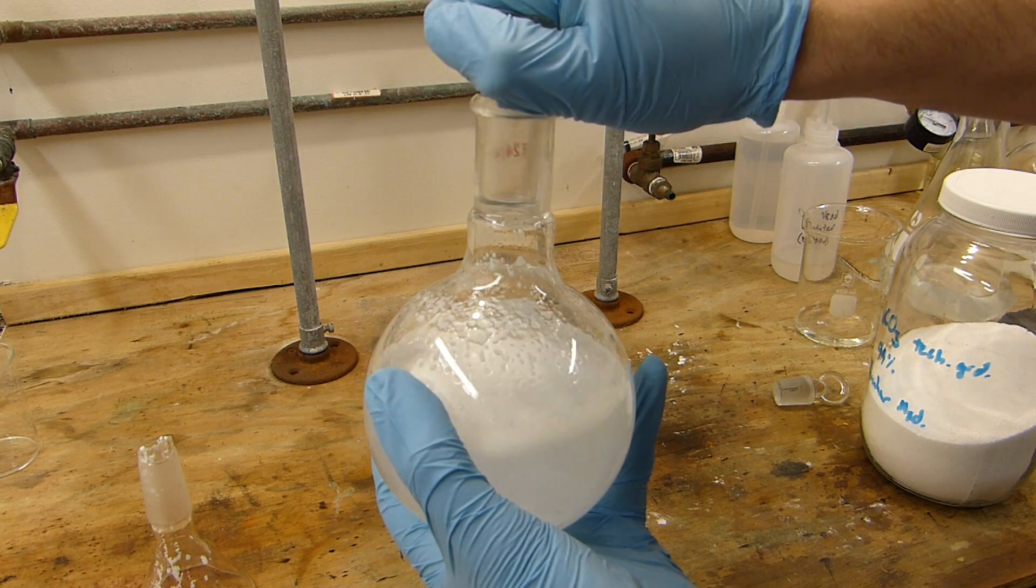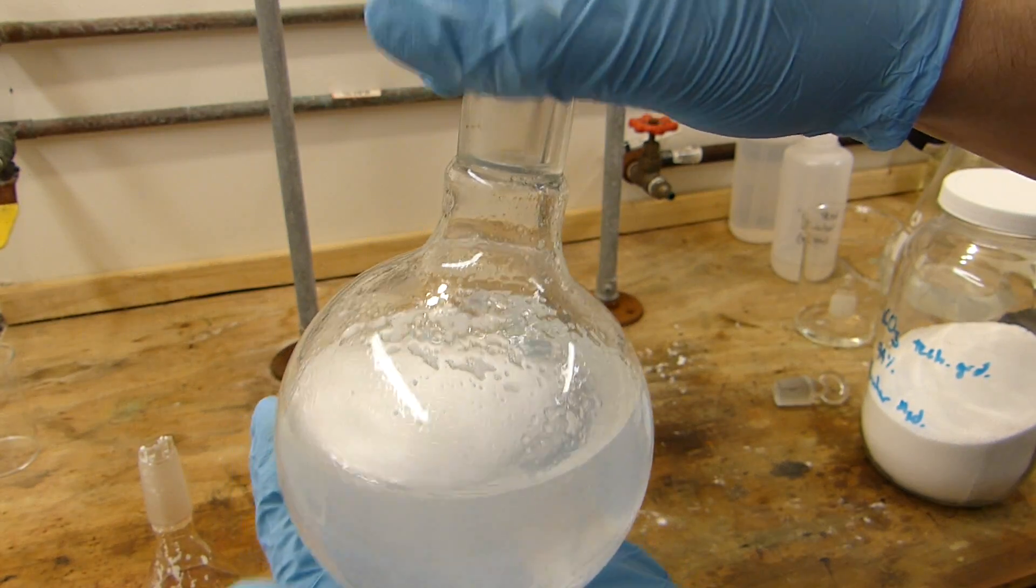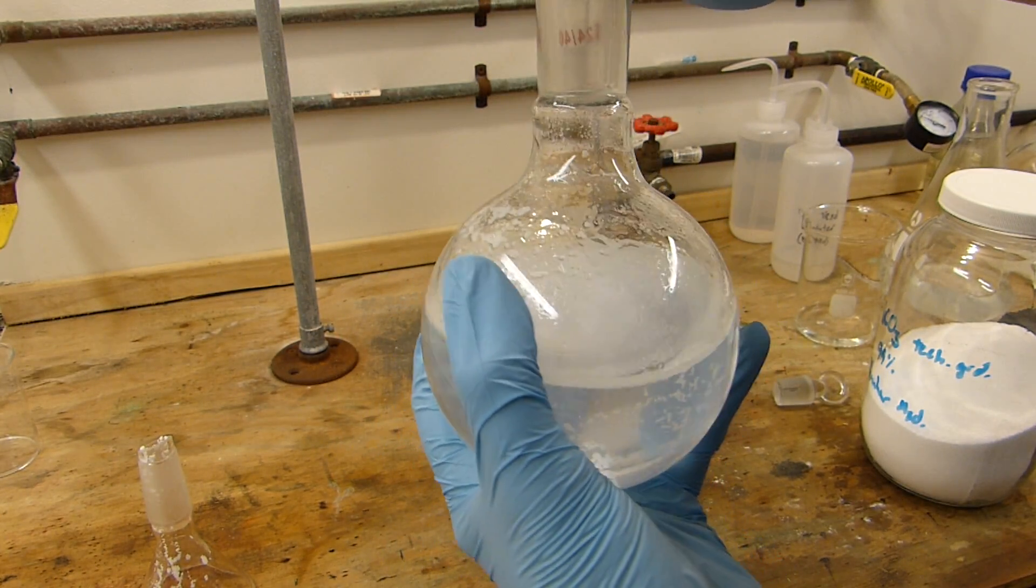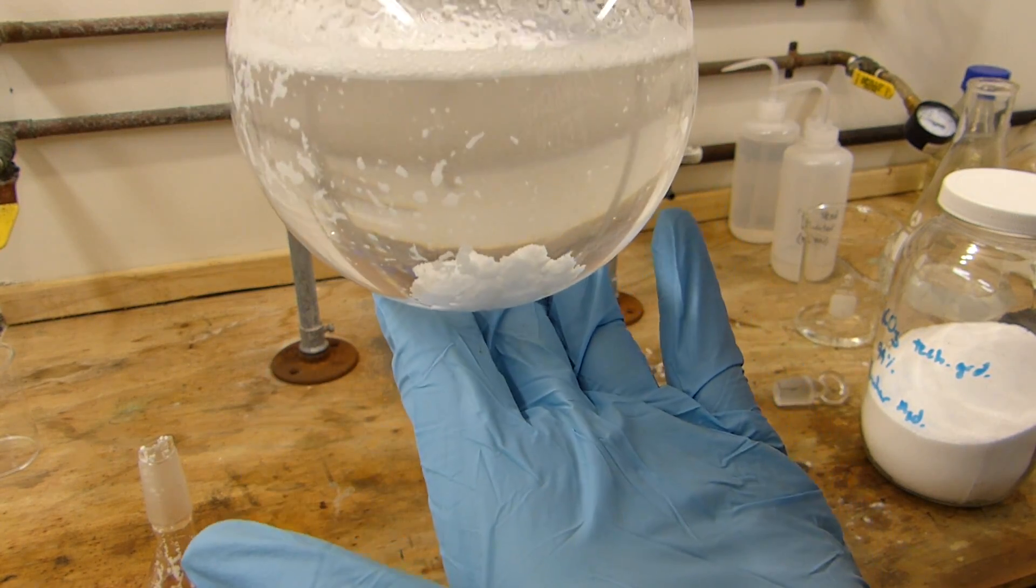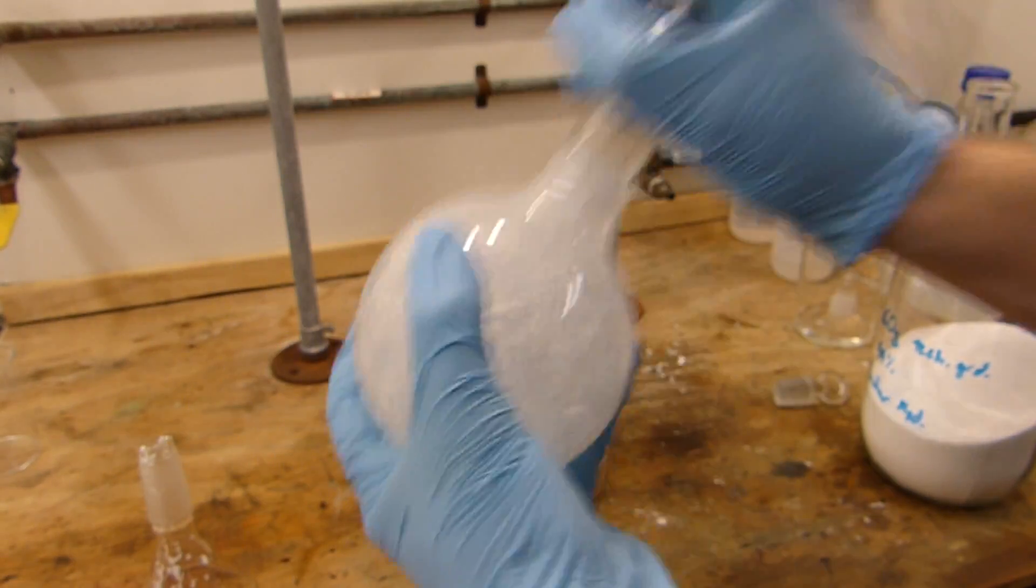Get the potassium carbonate mixed in and you can see it sort of clumps up in the presence of water, but we are very quickly removing the water from this dichloromethane as you can see it's becoming quite clear.